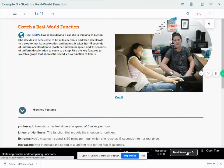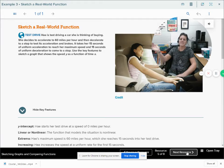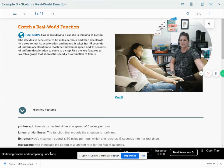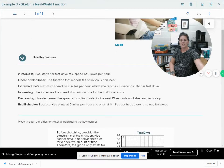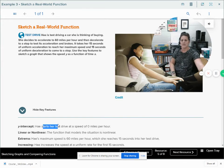So fun part, sketching real world functions. I think it's fun. Test drive. I know a lot of you see words, math, I don't want to read. I read in English class or whatever, but we're going to read in math too. Test drive. Hay is driving a car that she's thinking about buying. She decides to accelerate to 60 miles per hour and then decelerate to a stop to test the acceleration and the brakes. It takes her 15 seconds of uniform acceleration. So uniform means it's a constant increase, constant rate of change to reach her maximum speed and 15 seconds of a uniform deceleration to come to a stop.